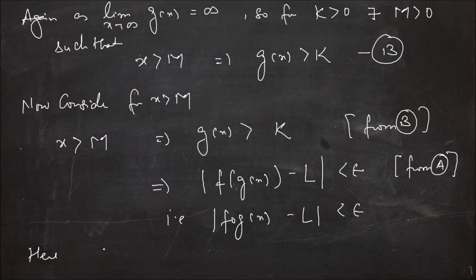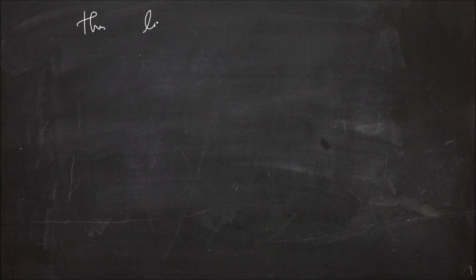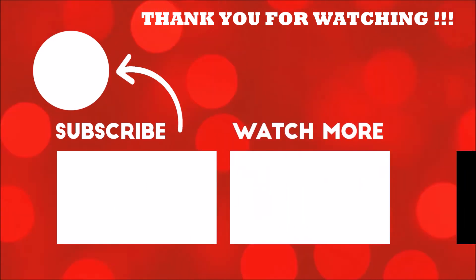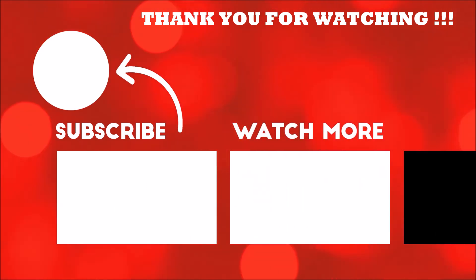Hence x greater than m implies |f(g(x)) minus L| is less than epsilon. Thus limit x tends to infinity of f(g(x)) is equal to L. This completes question number 13. We have now completed exercise 4.3. In my next video, I will start with exercise 5.1. Till then, stay tuned and subscribe to our YouTube channel for further updates. Thank you.